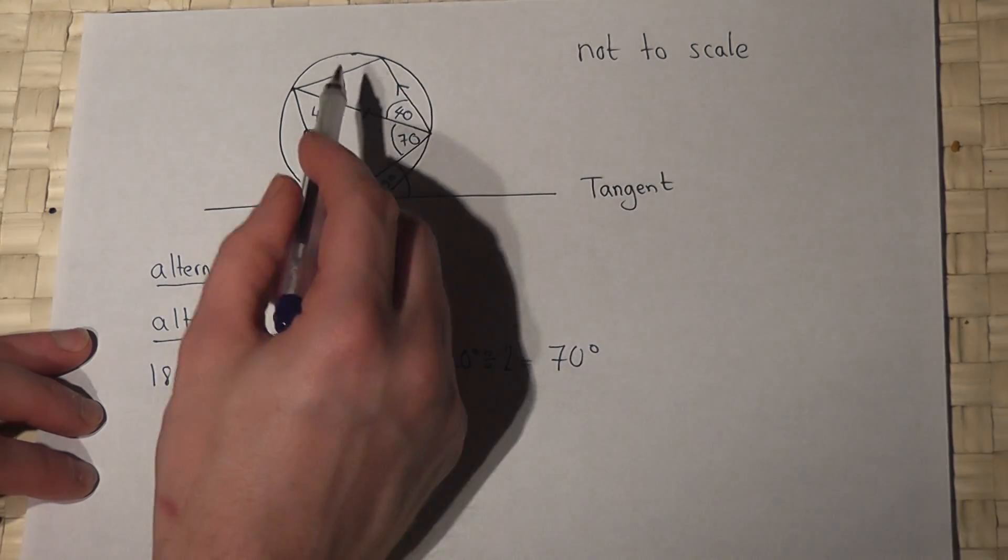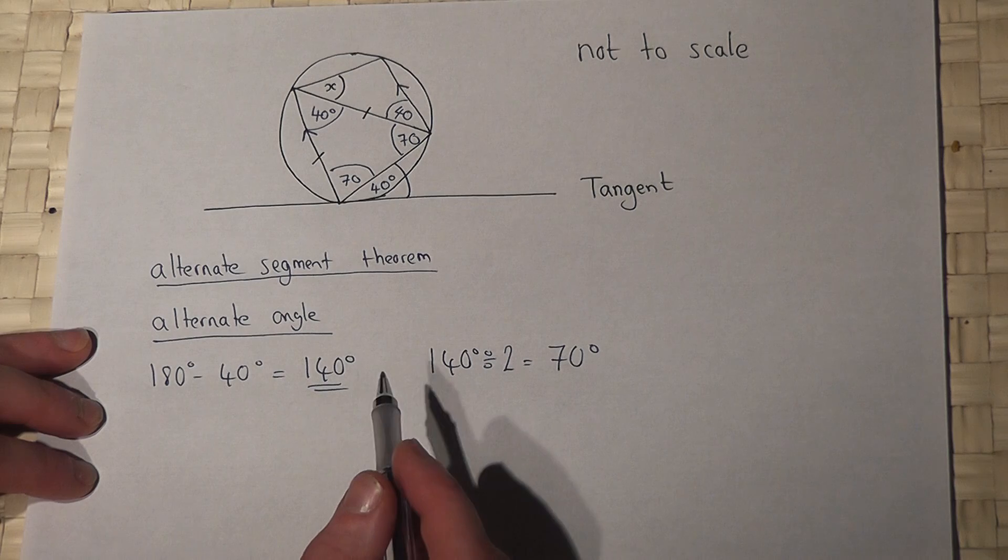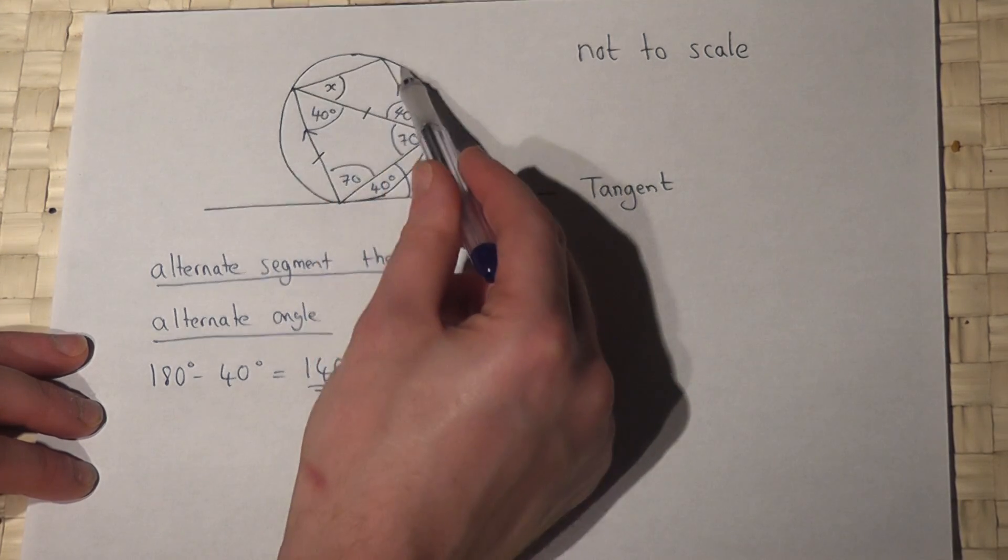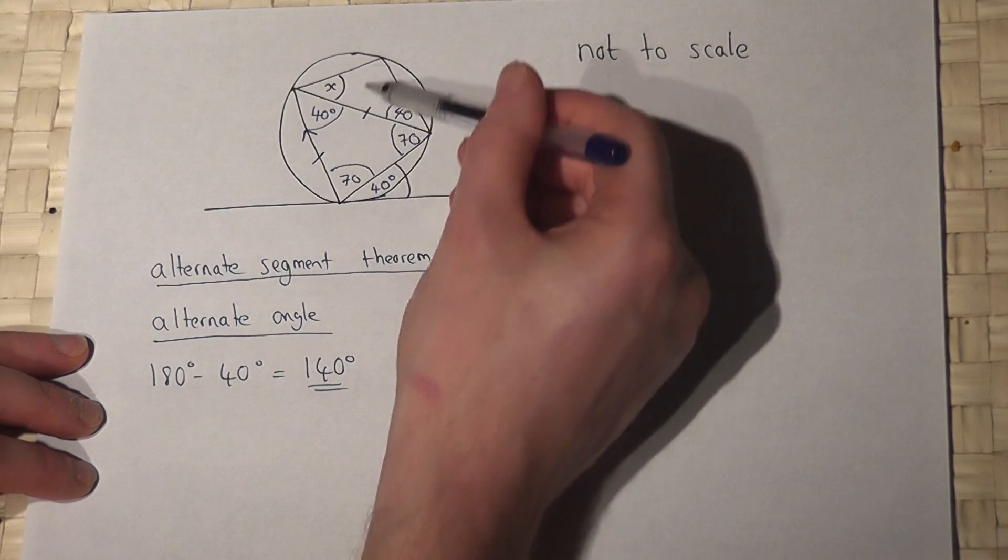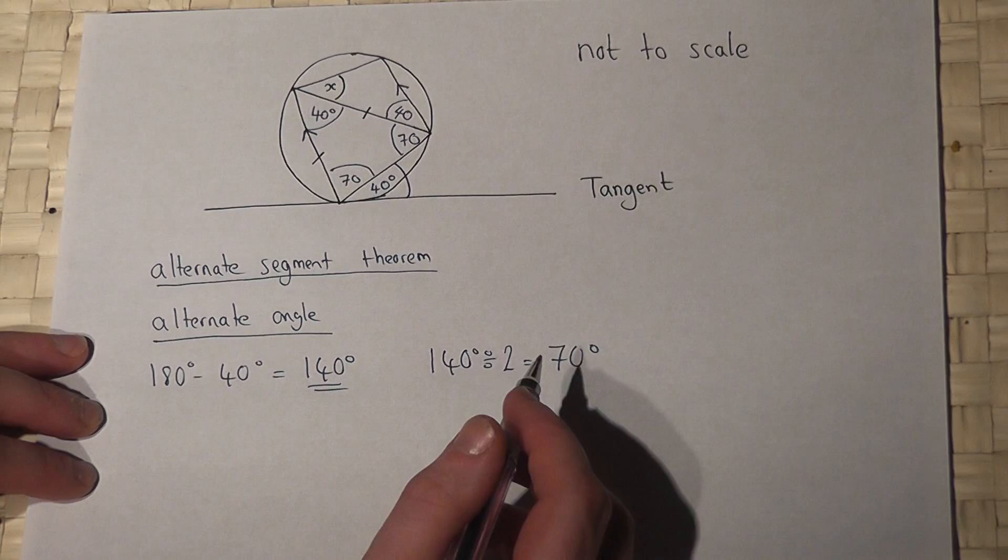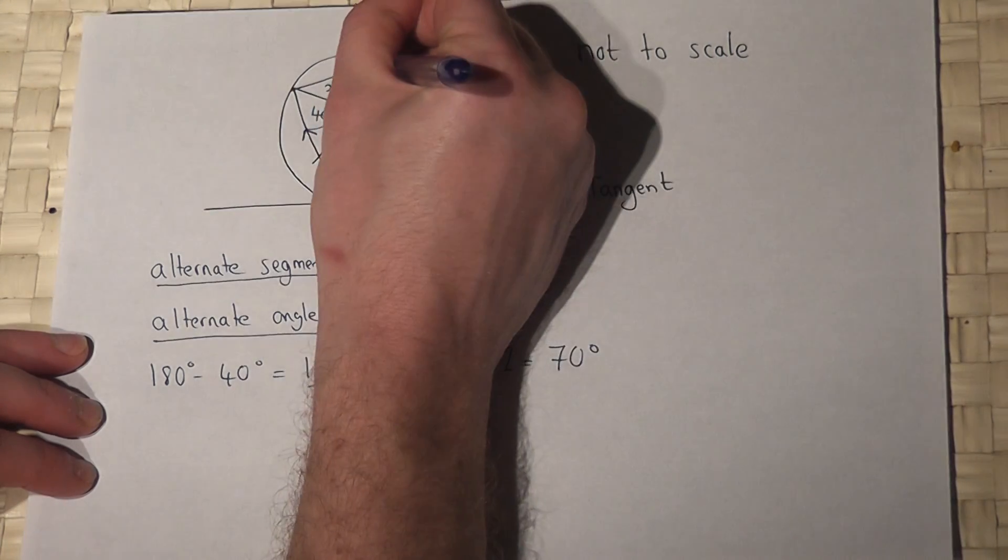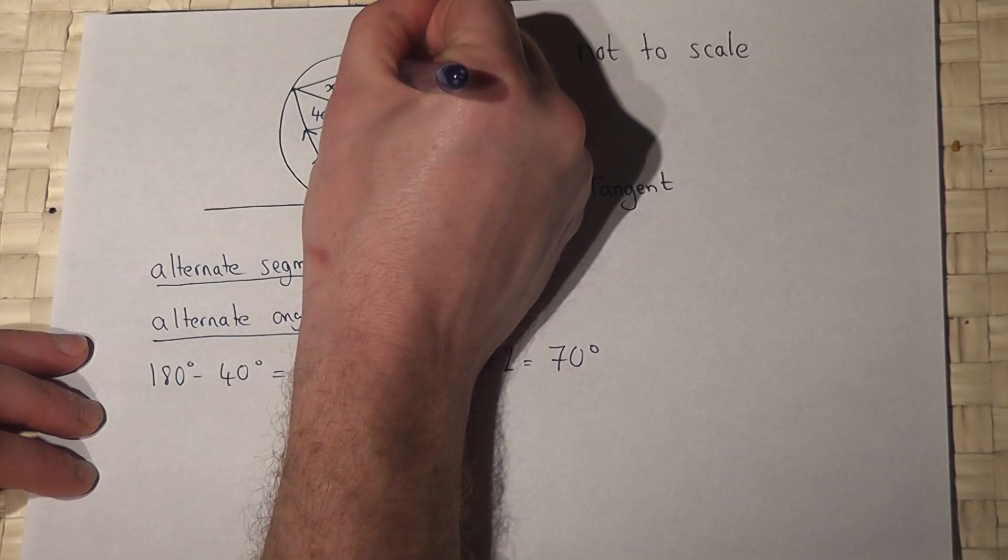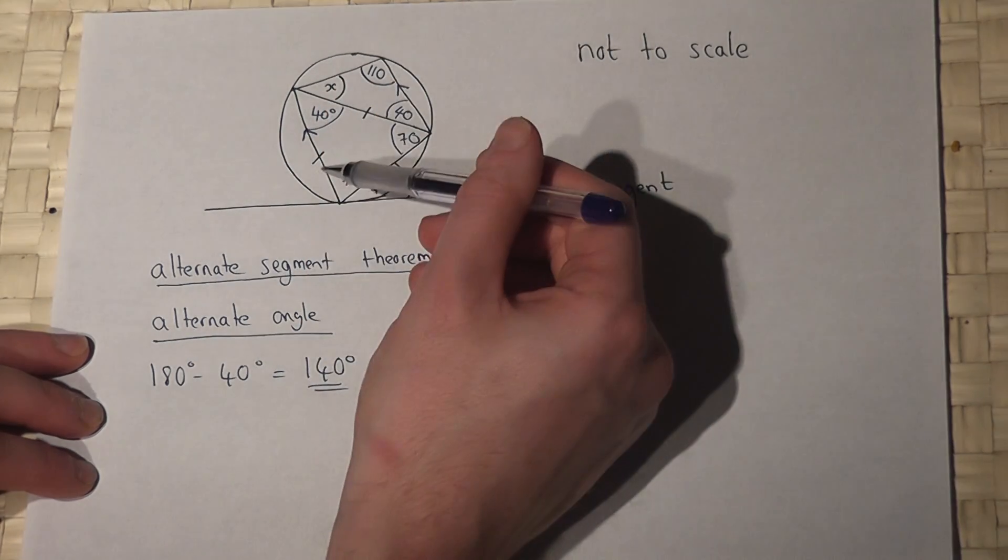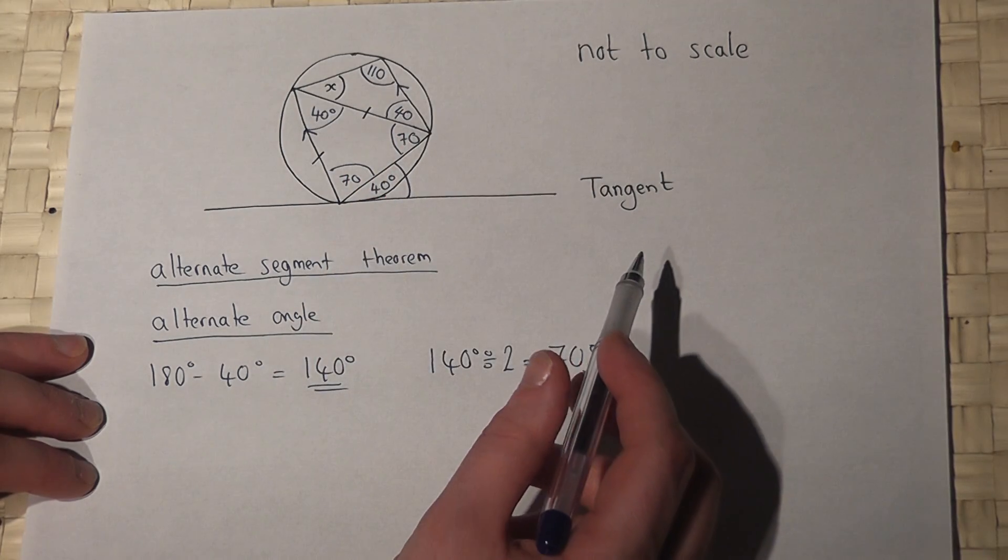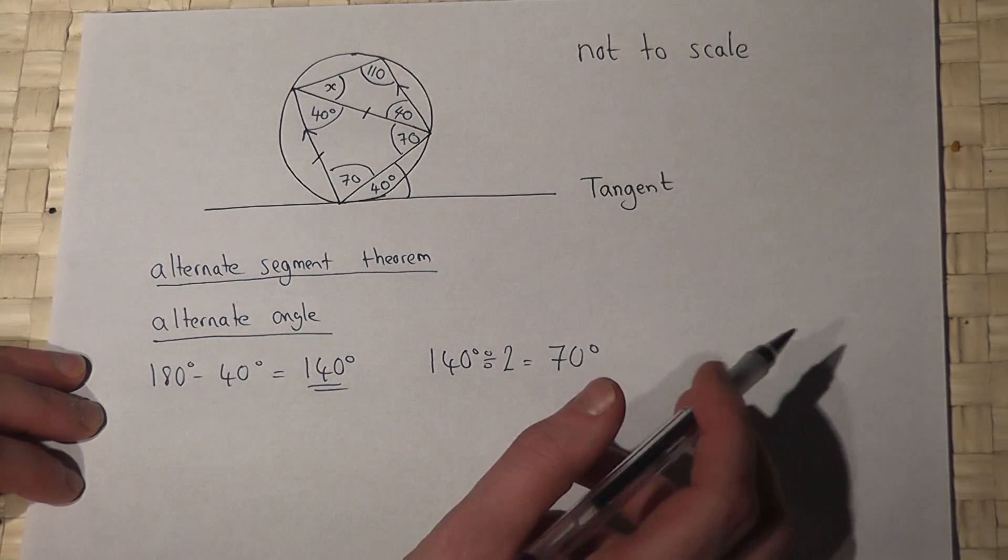To find X, I then use one final circle theorem. This is a cyclic quadrilateral, so these two angles here add up to 180 degrees. So this angle here, opposite the 70, must be 110. Again, opposite angles in a cyclic quadrilateral add to 180 degrees.